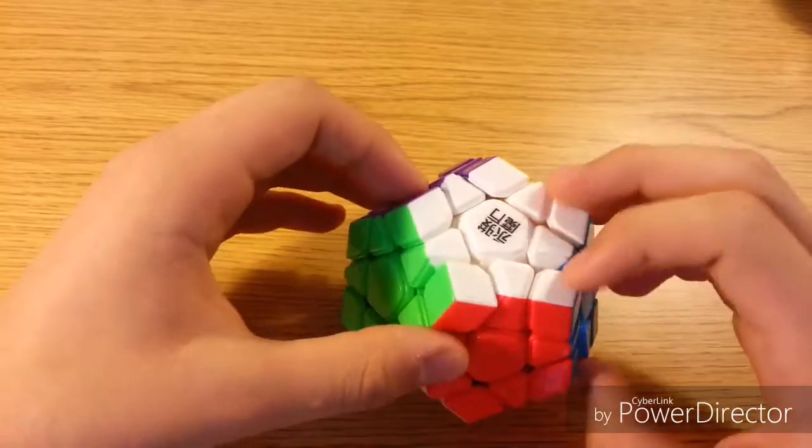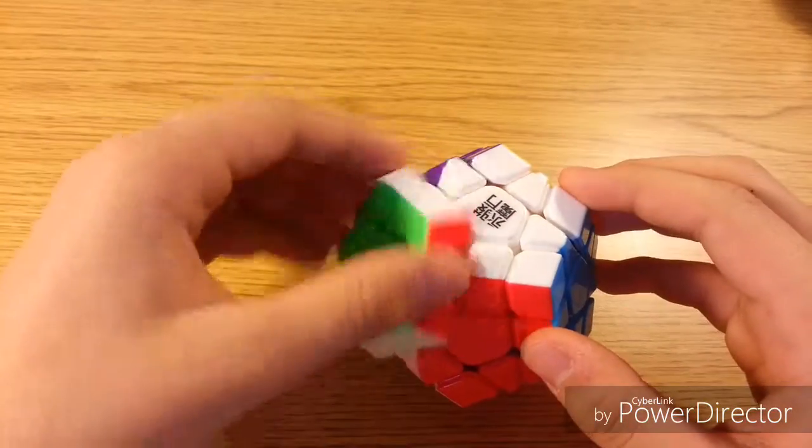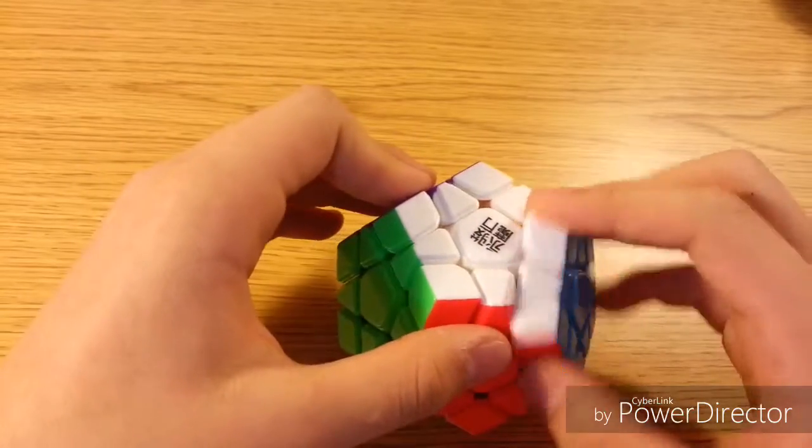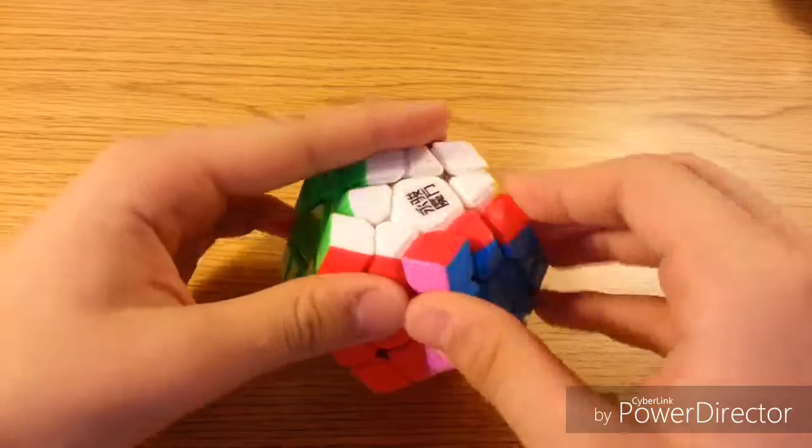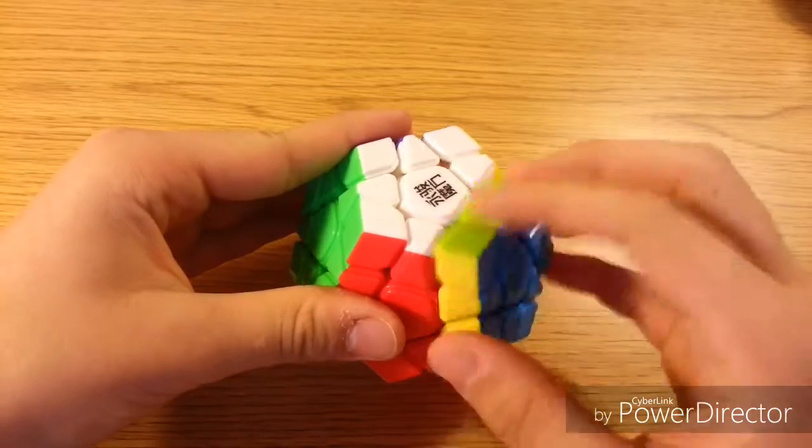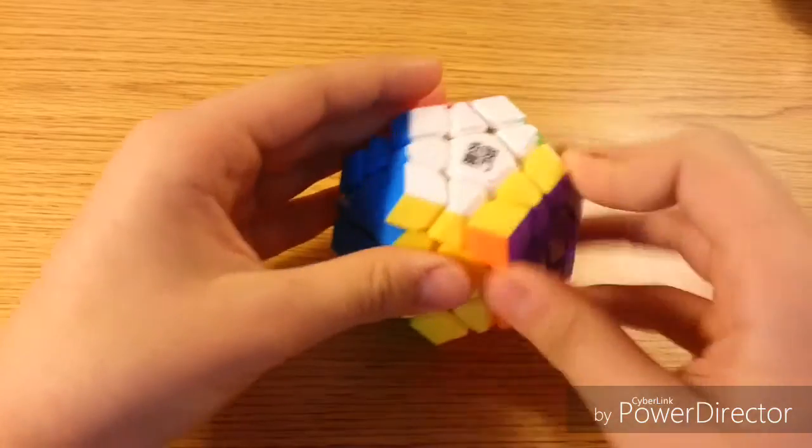But after lubricating and breaking it in a little bit—I did like 10 solves, maybe a little more—now it turns smoother and the sandiness is gone. Obviously, it's still slightly crispy.